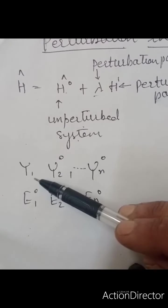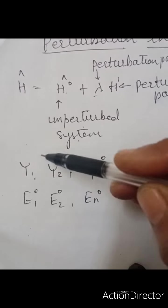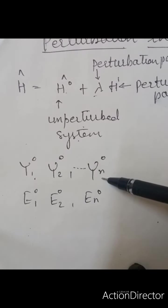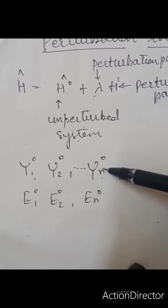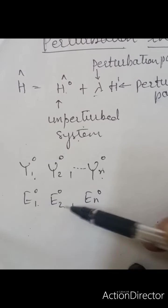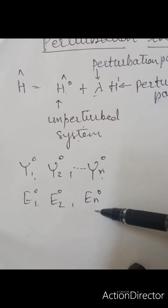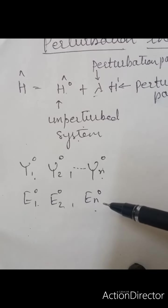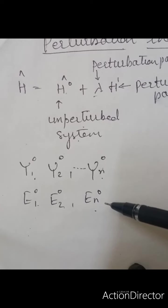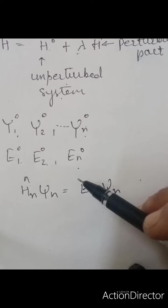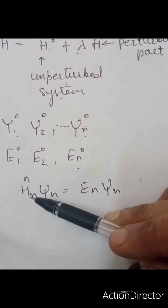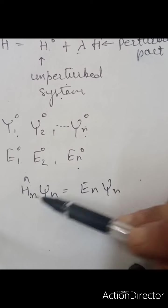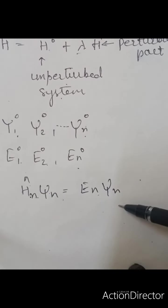We consider ψ₁⁰, ψ₂⁰, ... ψₙ⁰ as the solutions of the unperturbed state equation, and E₁⁰, E₂⁰, ... Eₙ⁰ as the corresponding eigenvalues. We write the Schrödinger equation in terms of n as: Hₙ ψₙ = Eₙ ψₙ. Let us consider this as equation number 3.